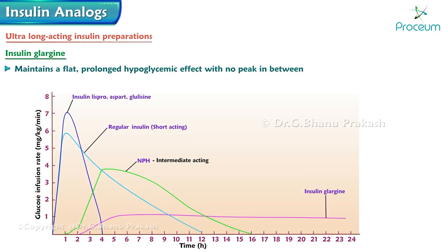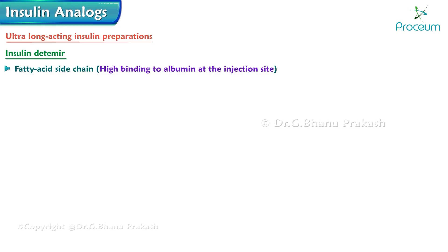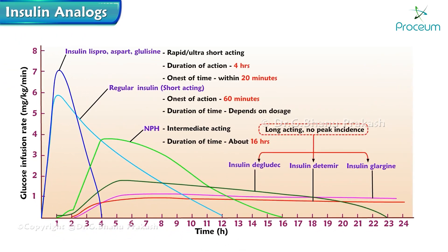Because glargine is at an acidic pH, it should not be mixed with other insulins that have a neutral pH. Insulin detemir has a fatty acid side chain, giving it high binding to albumin at the injection site. This causes slow dissociation of the drug, resulting in a long duration of action. The graph compares the extent and duration of action of various insulin types as indicated by glucose infusion rates required to maintain a constant glucose concentration.